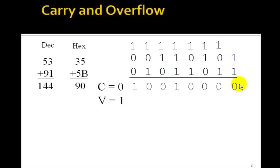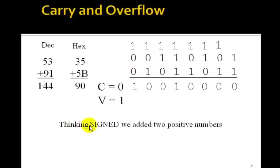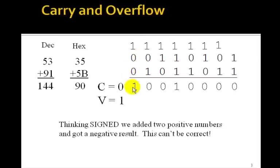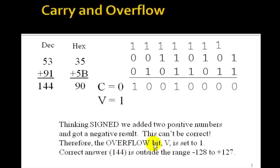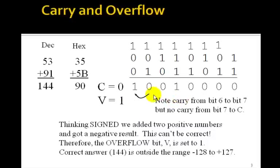But what about the overflow bit? In this case, the overflow bit will be set because thinking signed, we've added two positive numbers — both have sign bit 0 — and we got a negative result. That can't be correct, so the overflow bit is set to 1. The correct answer, 144, is outside the signed range minus 128 to plus 127, and that's why the overflow bit is set to 1. Note that we had a carry from bit 6 to bit 7, but no carry from bit 7 to the carry. Any time that condition holds, the overflow bit will always be set to 1.